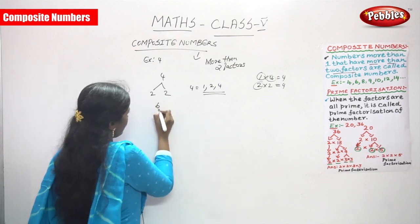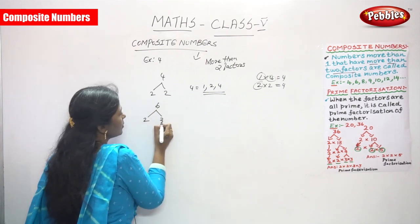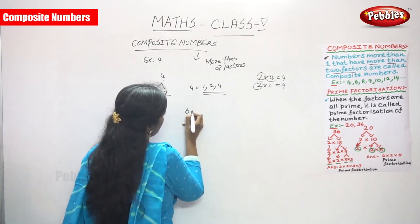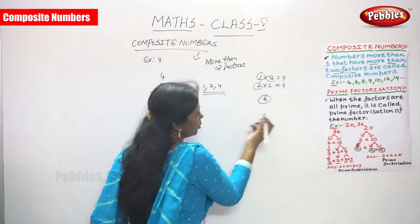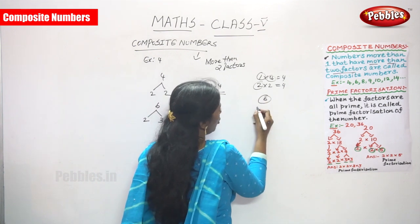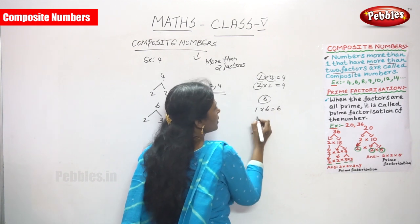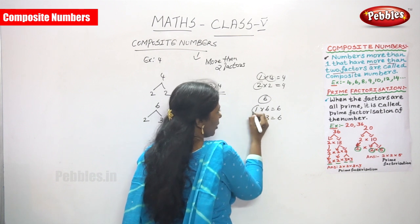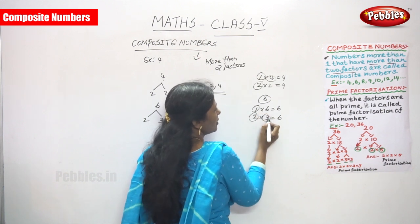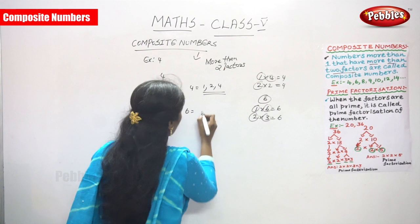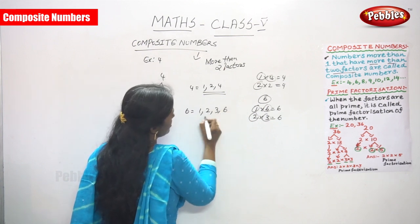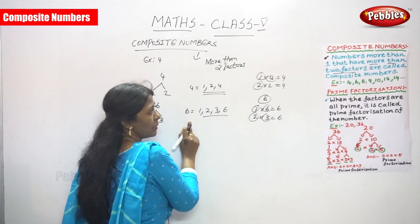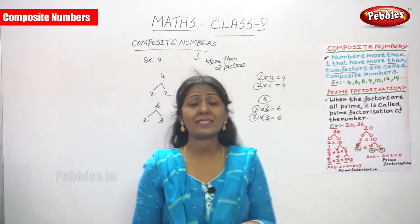The next example is 6. Two threes are six. You can verify it using a table: one into six is equal to six, and two into three is equal to six. So the factors of 6 are 1, 2, 3, and 6 — that is four factors, which is more than two. So 6 also comes under composite numbers.